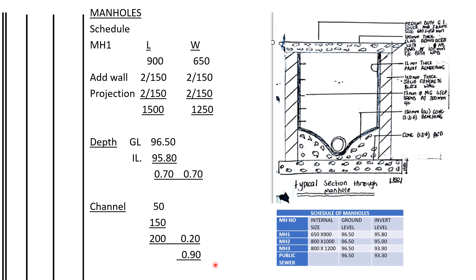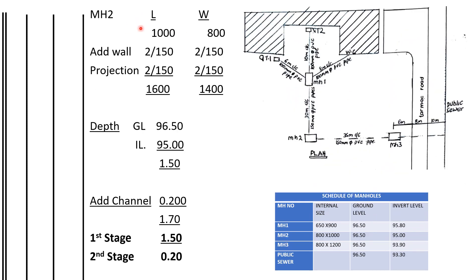For manhole two, the internal length is 1000 and the width is 800. We add the walls on both sides — two times 150 for the length and two times 150 for the width — and also the projections, two times 150 each side. The total length is 1600 and the total width is 1400.